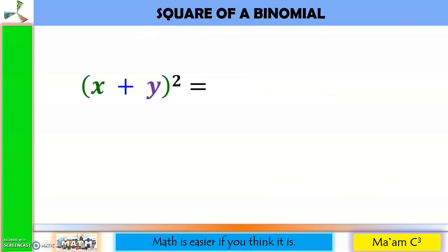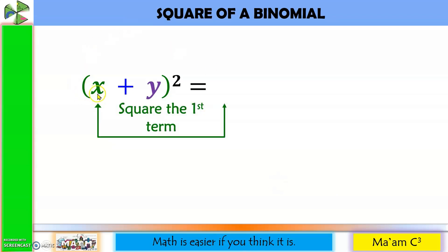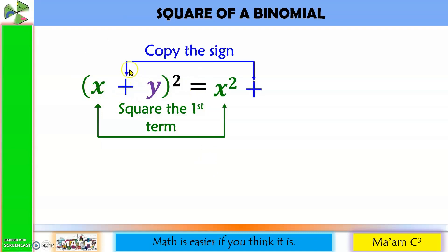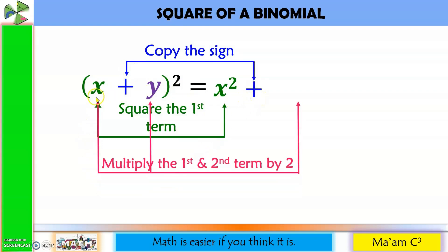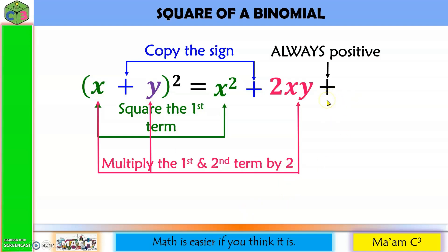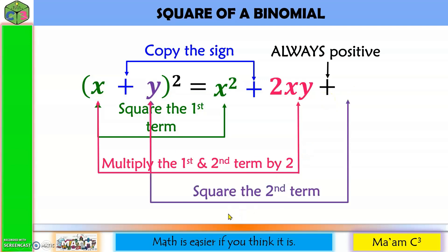If we have quantity x plus y squared, all we have to do is square the first term — the square of x is x squared. Then copy the sign: if this is plus, then we have plus. Next, multiply the first and second terms by 2: x times y is xy, times 2 is 2xy. The third sign is always positive. Finally, square the second term: y squared equals y squared.